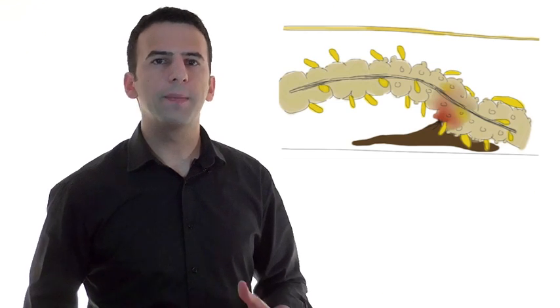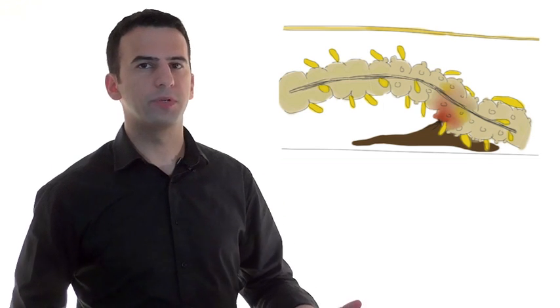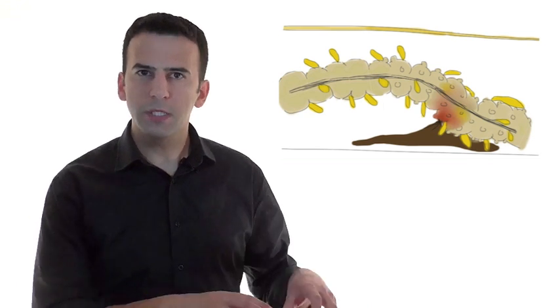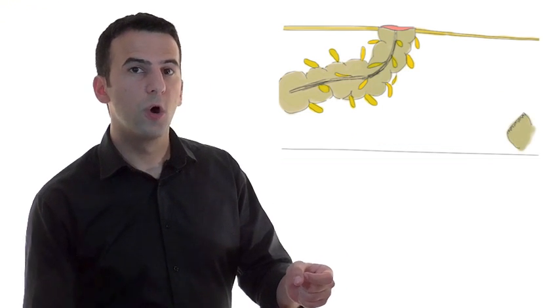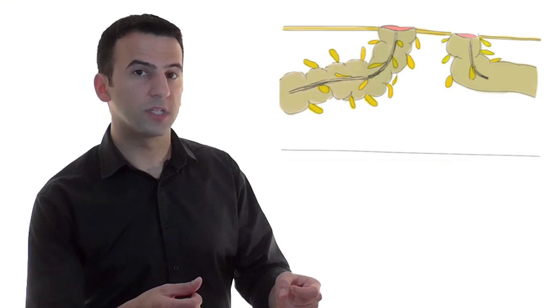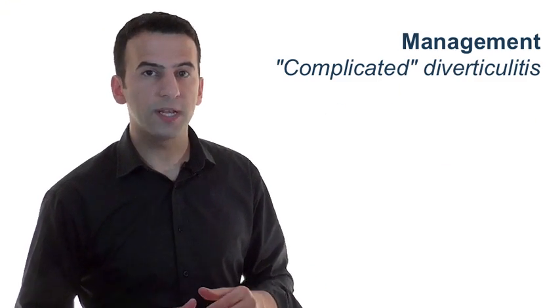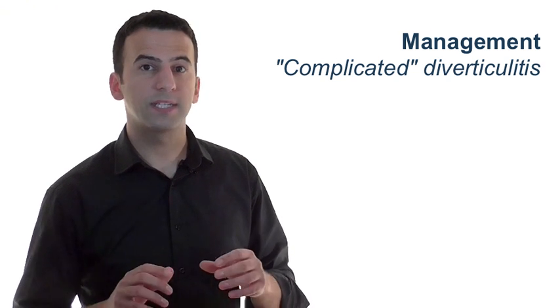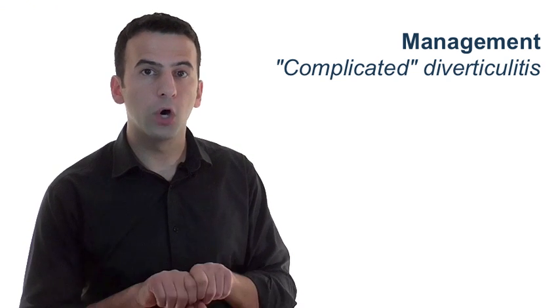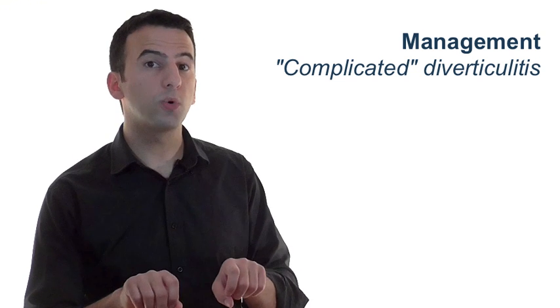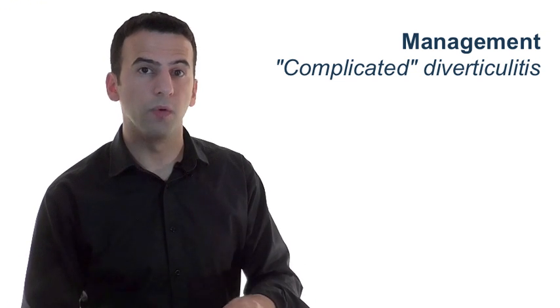Now, I remember getting a bit confused about what a Hartmann's procedure is, but then I learned it's really quite simple. You get the diseased bit of bowel, you put it in the bucket, bring the end out as an end stoma and close off the other distal end, or you could bring it up as a mucous fistula. Although there's no guarantee, this stoma does not necessarily have to be permanent, as a reversal of Hartmann's might be an option in the future where bowel continuity is restored once everything has settled down.